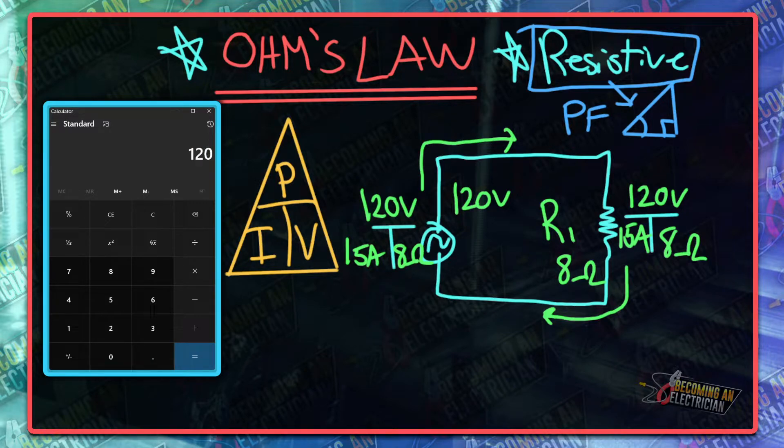120 volts times 15 amps gives us 1800 watts. So the total wattage in this circuit is 1800 watts.